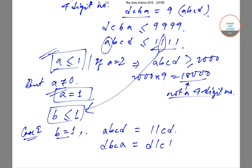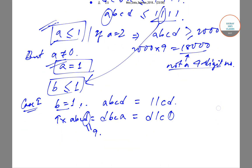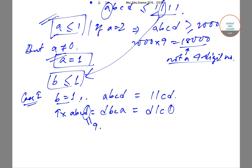DCBA is nothing but 9 times ABCD. If we multiply by 9, the unit digit of the result must be 1. That can only be possible if D is equal to 9, because 9×9 = 81, giving 1 as the unit digit. In any other case that is not possible, so D is equal to 9.